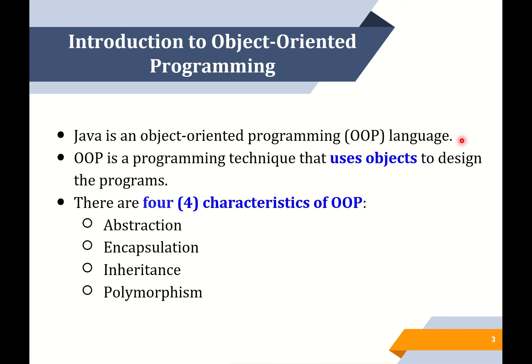Let's see the introduction to object-oriented programming. Java is an object-oriented programming language. OOP is a programming technique that uses objects to design the program. There are 4 characteristics of OOP: the first one is abstraction, second encapsulation, third inheritance, and the last one is polymorphism. We will look at the characteristics in the next slides.